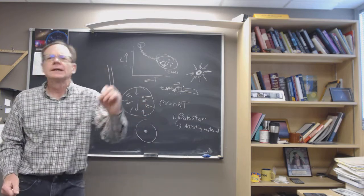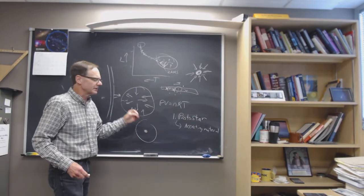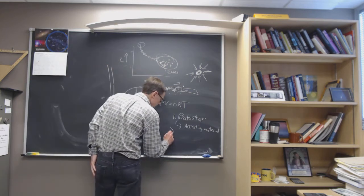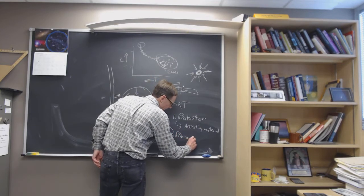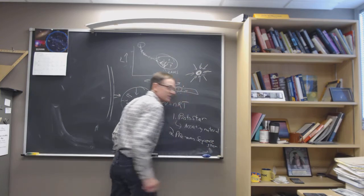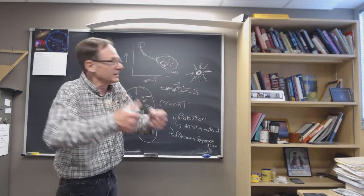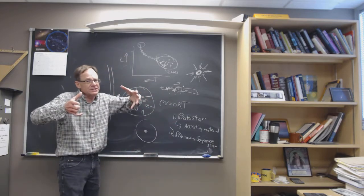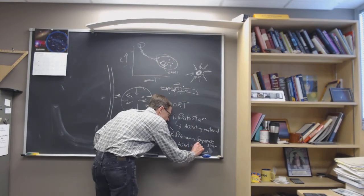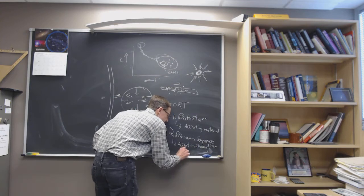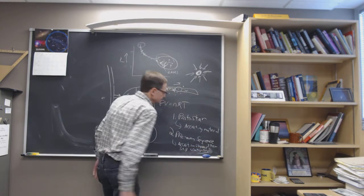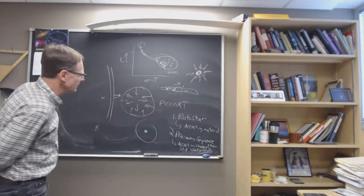The protostar heats up as it accretes material from the cloud. A denser core can pull in surrounding gas. At some point it stops accreting material and becomes a pre-main-sequence star — still not on the main sequence, still getting hotter, but no longer pulling in material. A pre-main-sequence star has stopped accreting but is still contracting, so it's still heating up because it's still out of thermal equilibrium, still getting smaller and smaller.